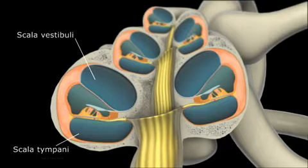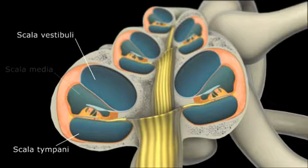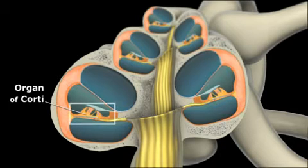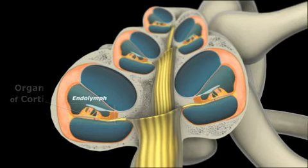Both the scala vestibuli and scala timpani contain perilymph. Between the scala vestibuli and scala timpani is the scala media. This houses the organ of Corti, which is referred to as the receptor organ of hearing. The scala media is filled with endolymph.